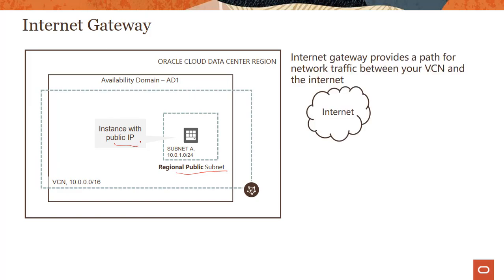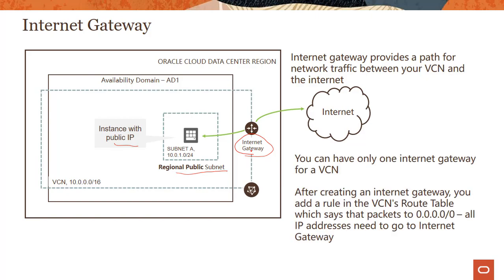If it's a web server or load balancer, we want users to access it. So we create this thing called internet gateway. It's a managed service, so you really don't need to care about the bandwidth or HA — all those are taken care of by Oracle. You create this internet gateway, and then using that gateway, packets can go in and out to this instance in the public subnet.